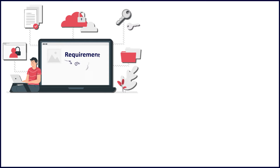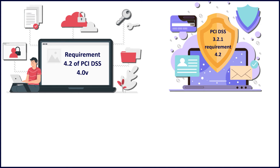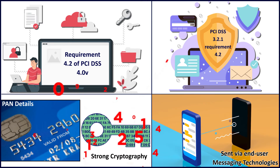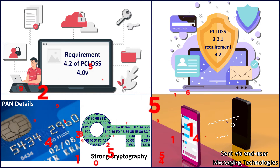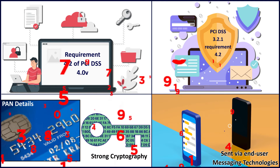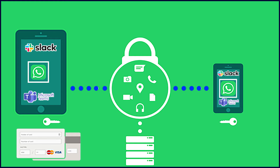Moving on to requirement 4.2 of PCI DSS 4.0: it covers basically the same ground as 3.2.1 but highlights the need for PAN details to be rendered unreadable or secured with strong cryptography whenever sent via end-user messaging technologies. In my opinion, even if it is encrypted, it looks bad for your company to be sending card data over tools like Microsoft Teams, Slack, or WhatsApp. You should find something better for sending something as sensitive as card data.